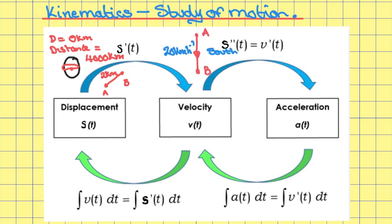Velocity and speed are closely related, but velocity has one extra piece of information. If I traveled from A to B and my speed was 20 kilometers per hour, my velocity would be 20 kilometers per hour south, because I'm traveling in a southerly direction.